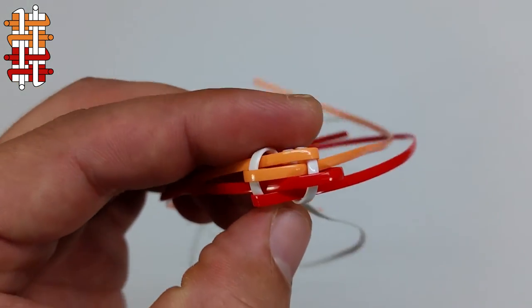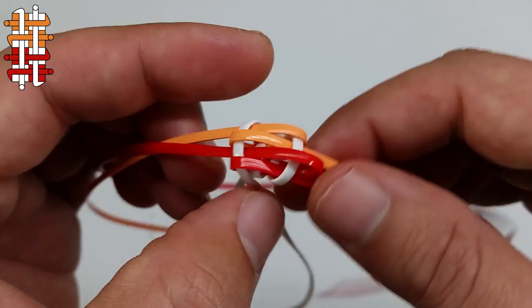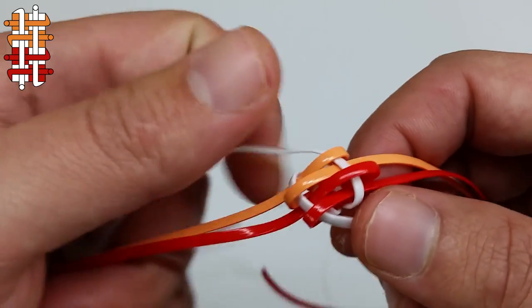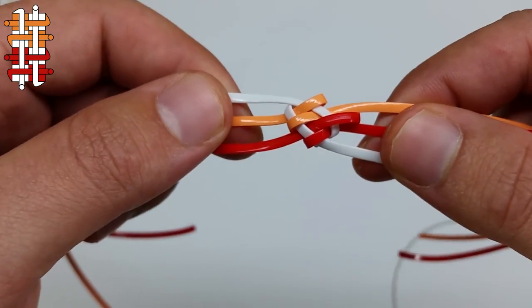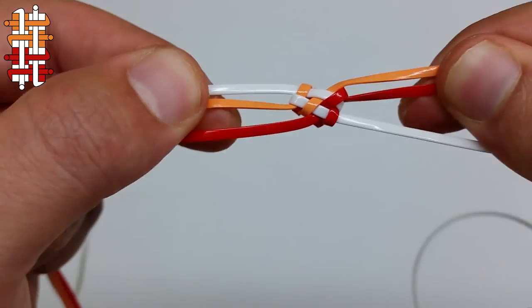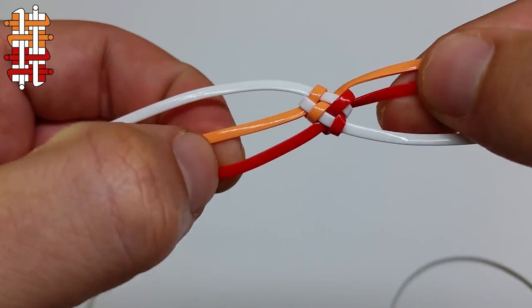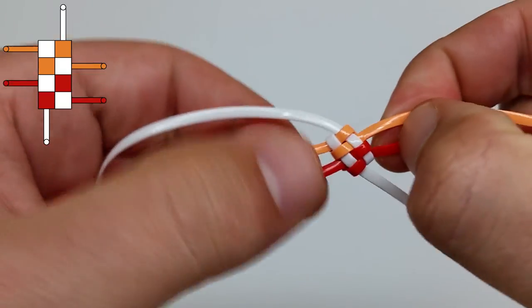With that, we need to pull all the strings now. Take the three strings on the left and three strings on the right. Pull all the strings, and with that, you complete the right-hand brick stitch.